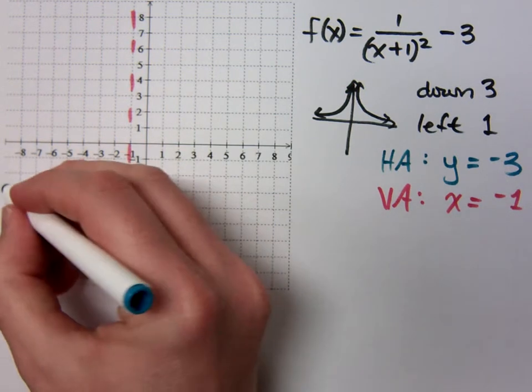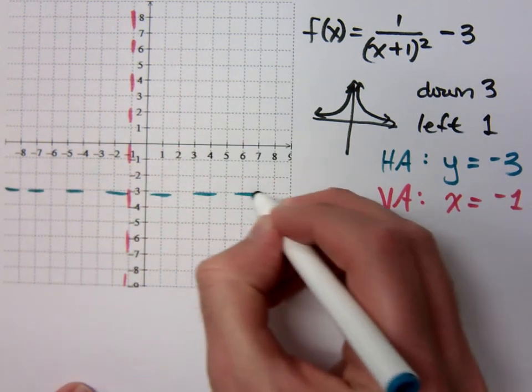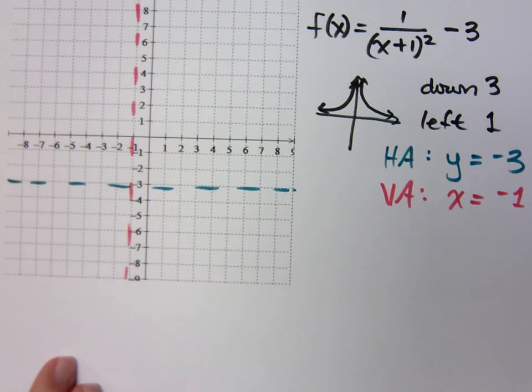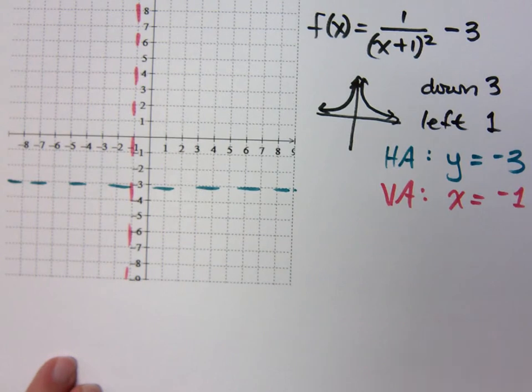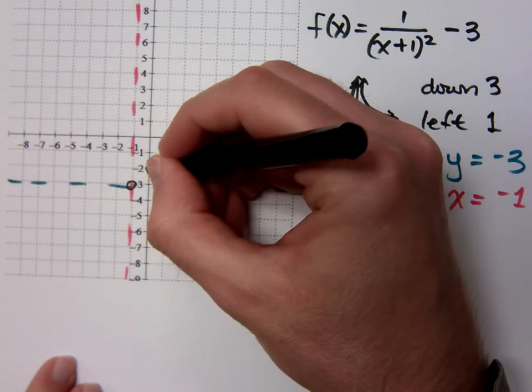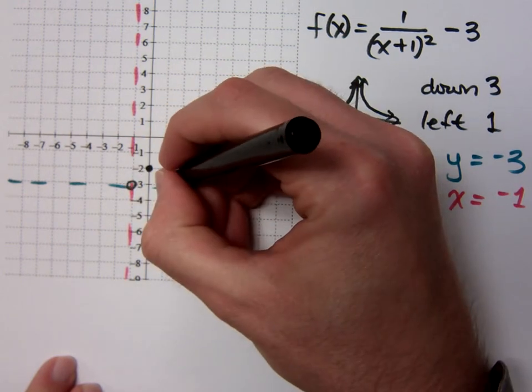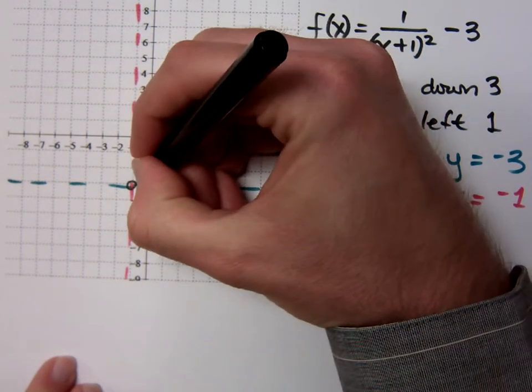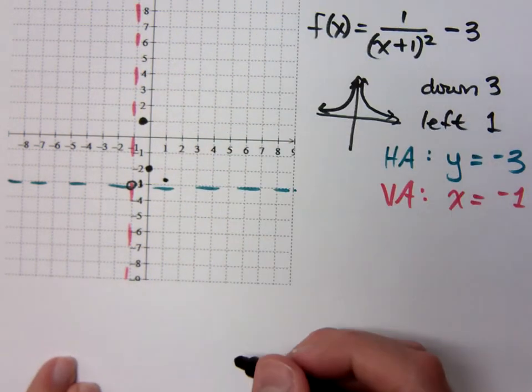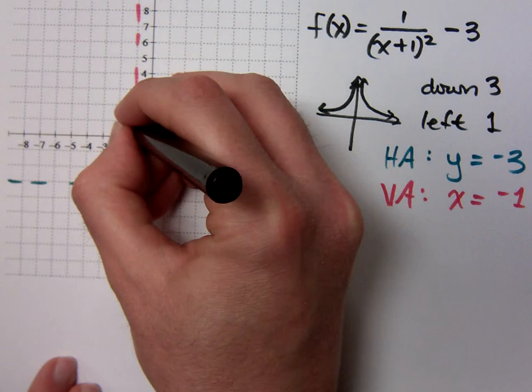y equals negative 3, and I just plot my points like I had before, right? You're basing it off of this guy right here. That means you get (1,1), (2, 1/4), but (1/2) you get 1, 2, 3, 4, and then you can flip these guys over...